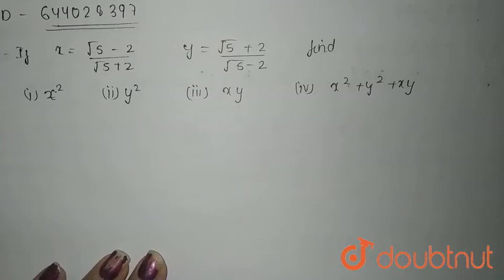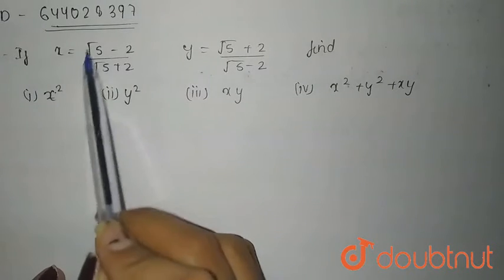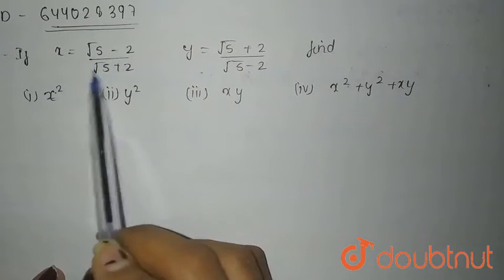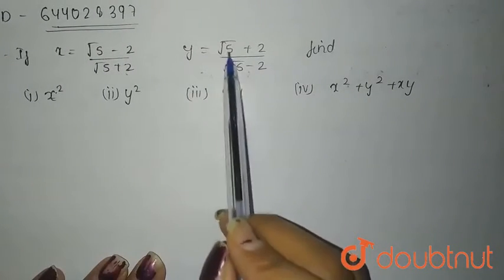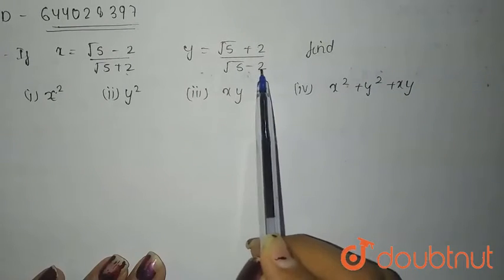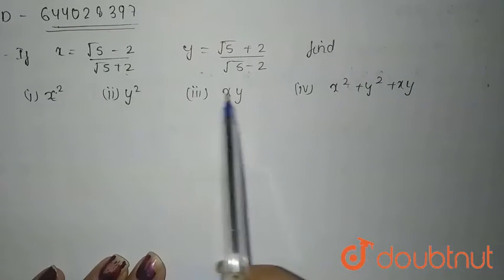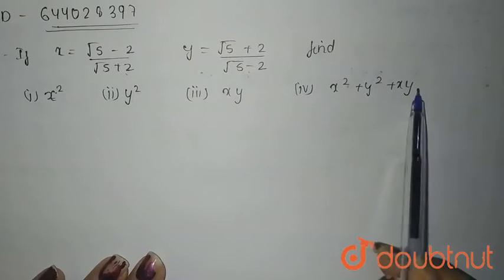Hello everyone. So, the given question is: if x equals (√5 minus 2) upon (√5 plus 2), and y equals (√5 plus 2) upon (√5 minus 2), find x squared, y squared, xy, and x squared plus y squared plus xy.